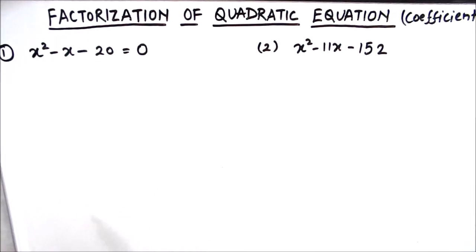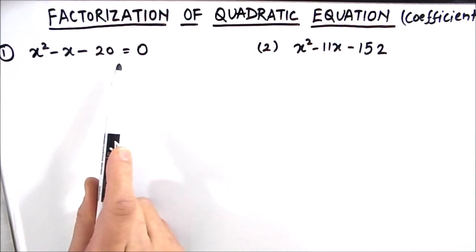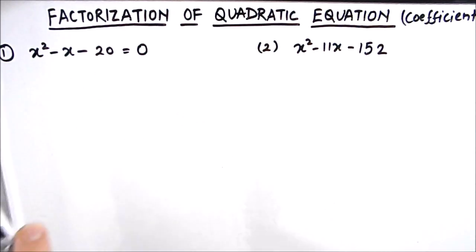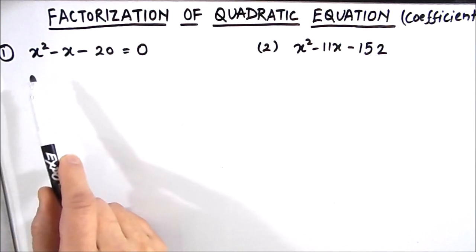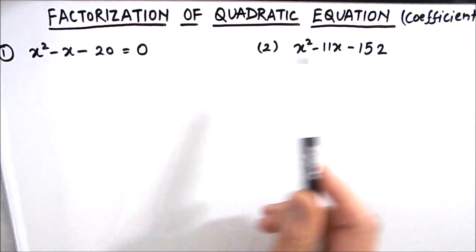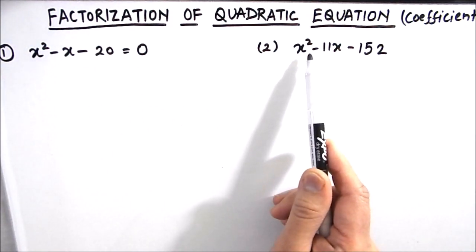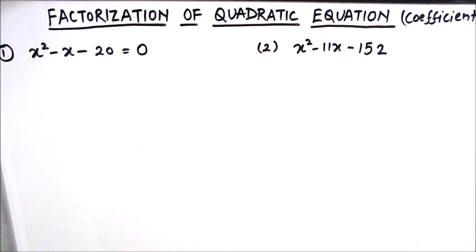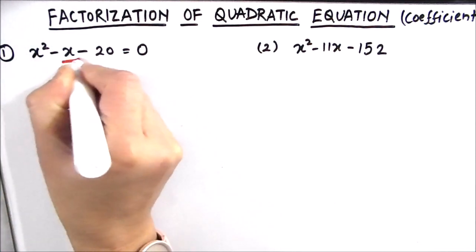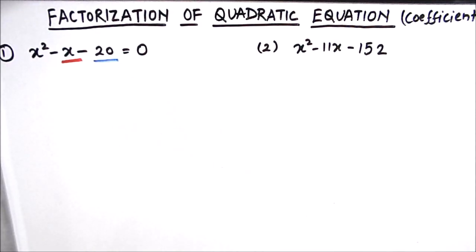Let's start with the first quadratic equation which is x squared minus x minus 20 is equal to 0. In this type of quadratic equation, when the coefficient of x squared is 1, we are going to find two numbers such that the sum of the two numbers is equal to negative 1 and the product of the two numbers is equal to negative 20.